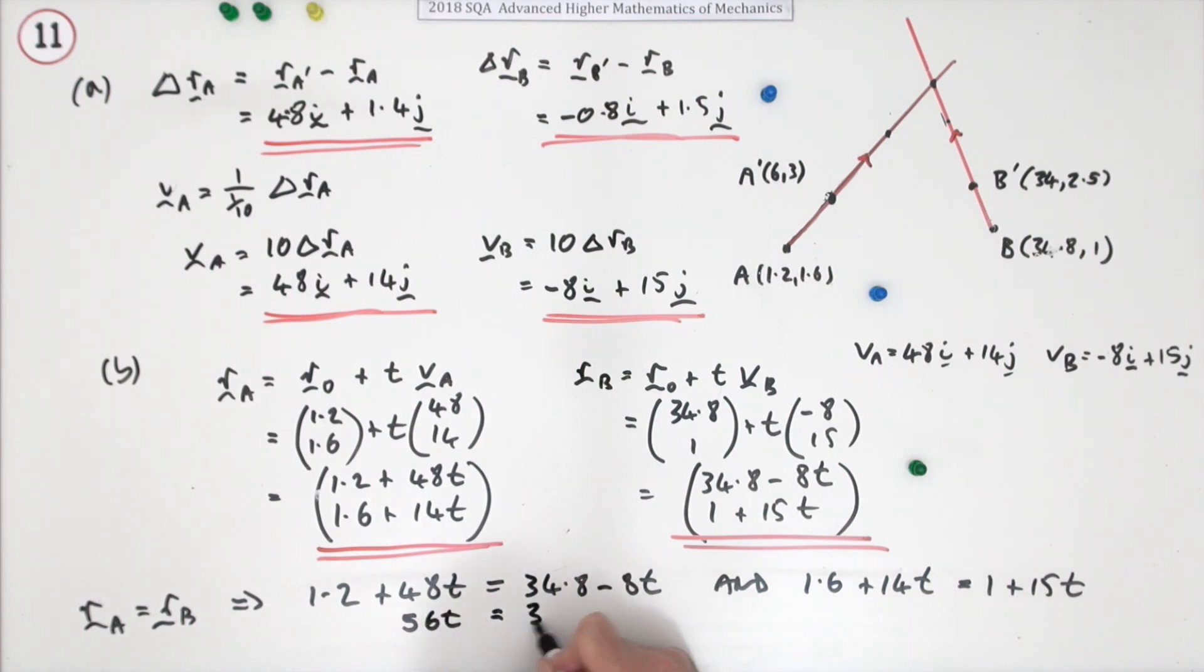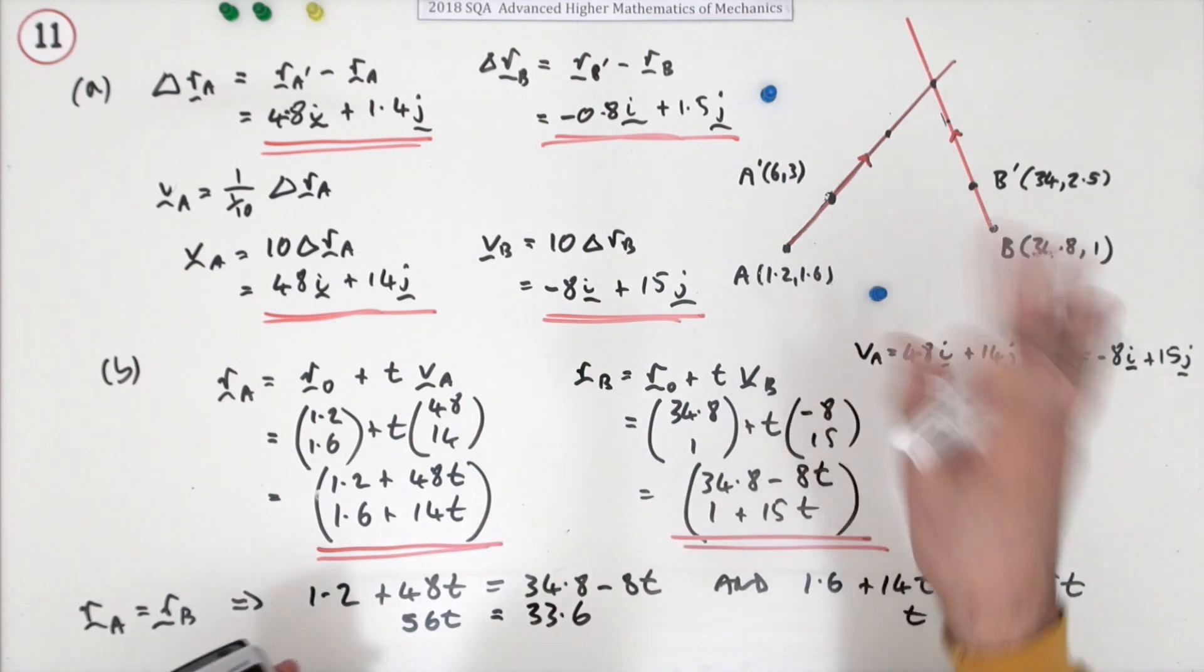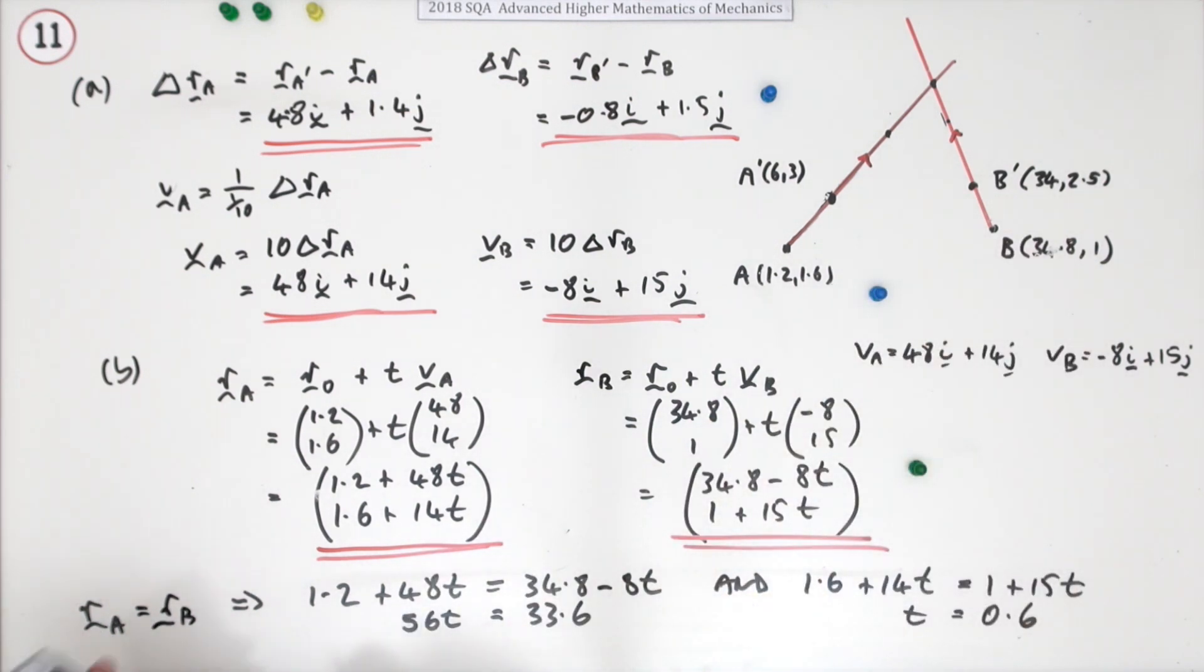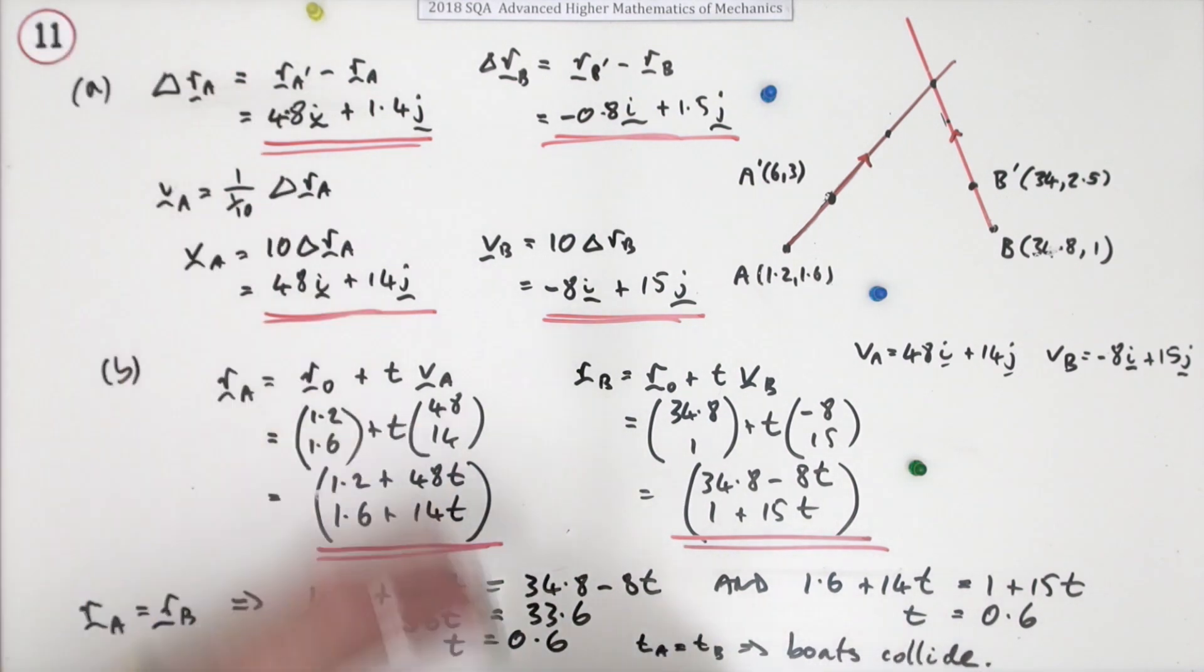Well bringing that 8 across here makes that a 56t. Bringing that across makes that a 33.6. That was an easy one, so there's an answer 0.6. If this comes to 0.6 you're in business. Well the boats would be because they've collided, but we'll have proved that they're going to collide and it comes to 0.6, so there we go. Now it's just a case of how can I write down my answer. Well t_A equals t_B which means boats collide. Now effectively there were marks just for the two independent calculations and showing that they were the same.